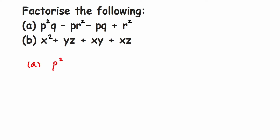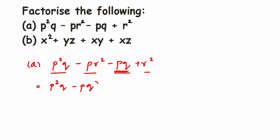So we have p squared q minus p r squared minus p q plus r squared. I'm going to group the terms so that I can take something common from them. I'll rearrange: I'll put p squared q and minus p q together, and group minus p r squared and plus r squared together. So this equals p squared q minus p q, and then minus p r squared plus r squared.